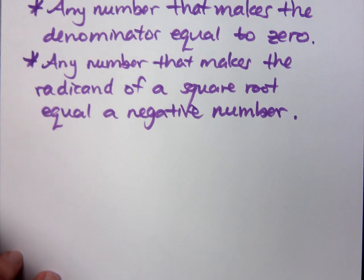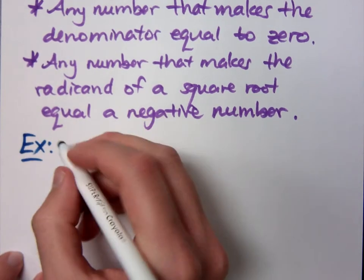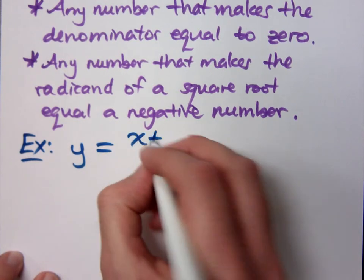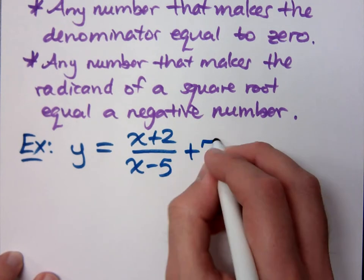You'll see some of these examples in the book. They'll say something like this. They'll have y equals (x+2)/(x-5) + 7.